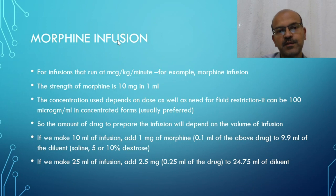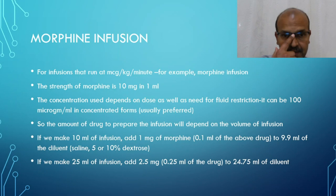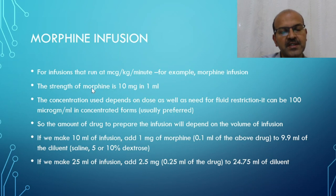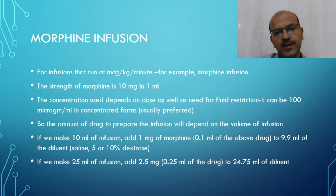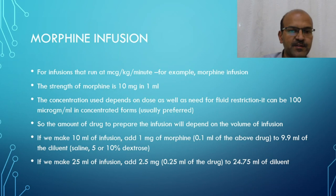Coming on to infusions that work on milligram or microgram per kilogram per minute, or milligram per kilogram, depending on the medication. The example we will discuss here is morphine infusion. The strength of morphine is normally 10 milligram in one ml, and the concentration we use depends on the dose as well as the need for fluid restriction. We usually use 100 microgram per ml in the concentrated form, as it gives flexibility to drop or increase the dose.